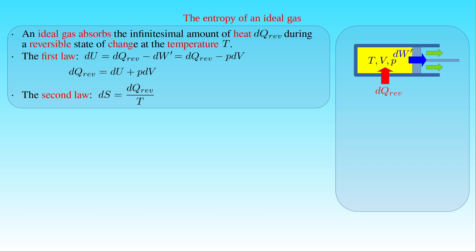By substituting the expression obtained for dq_rev into the second law, the infinitesimal change in the entropy S of the gas can be written as the ratio of dU plus P times dV, to T.